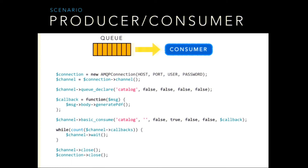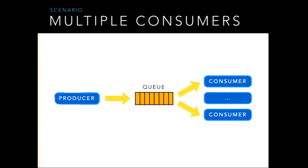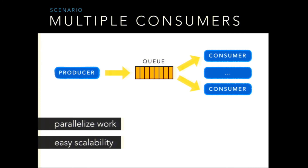An important thing is that we can distribute our code over multiple consumers, parallelizing work and gaining easy scalability. But keep in mind that messages are dispatched by default with a round-robin algorithm — a simple algorithm that dispatches messages in a circular way, so on average each consumer receives the same number of messages.